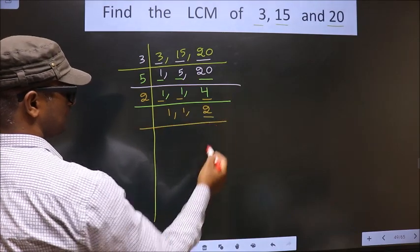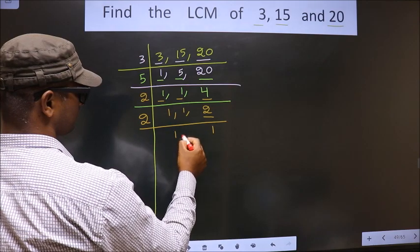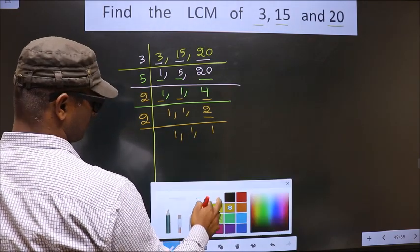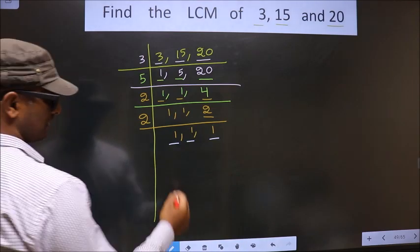Now, here we have 2. 2 is a prime number. So, we take 2 once 2. So, now we got 1 in all the 3 places. So, now our LCM is.